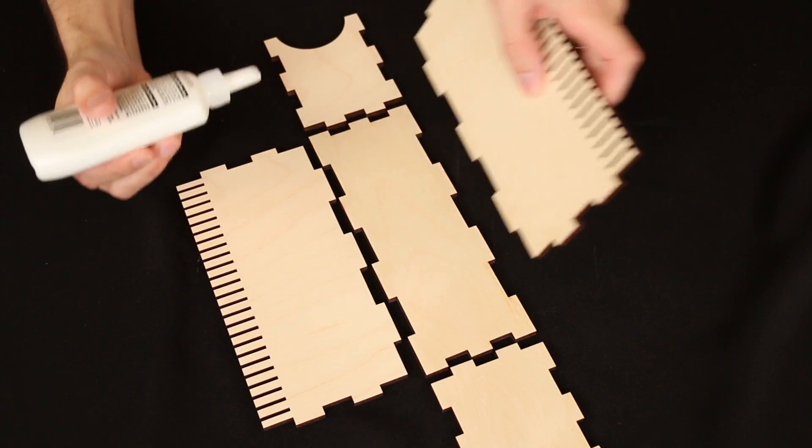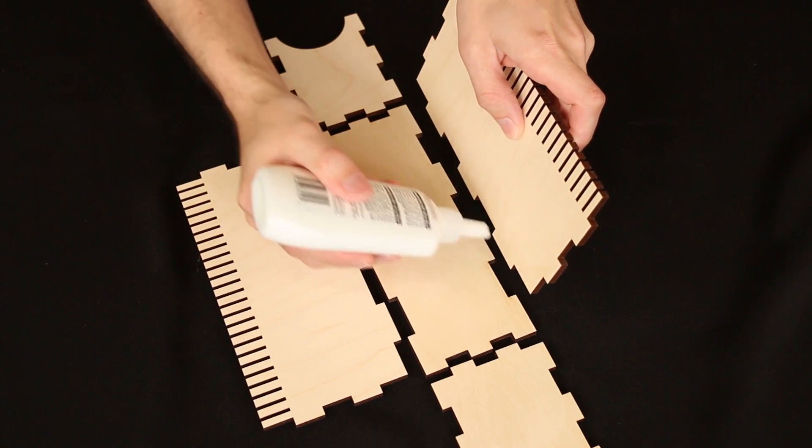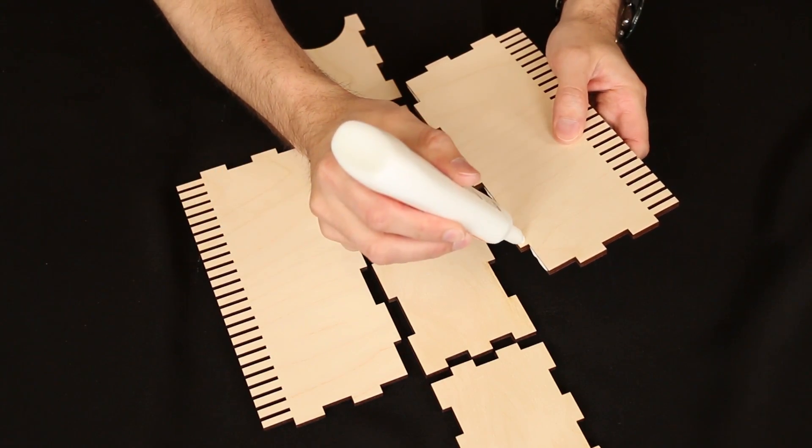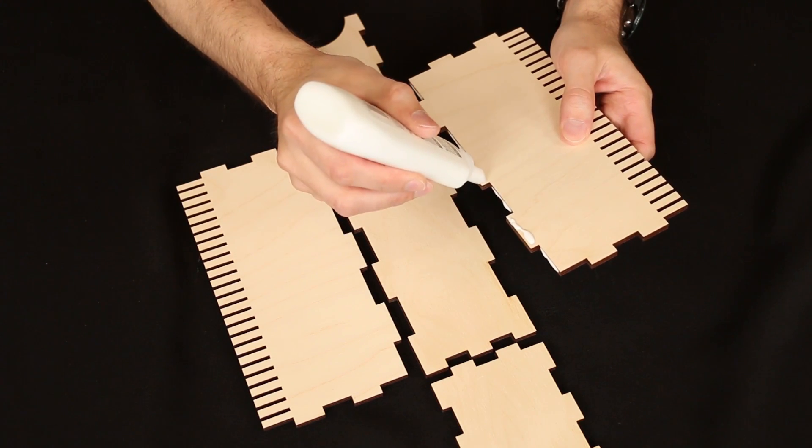And once you've filled in all these inside grooves, you'll see that when we put this wall against the base, these tabs are also going to be touching. So this is another spot we'll want to add some glue. Again, not too much, but enough to cover the area.